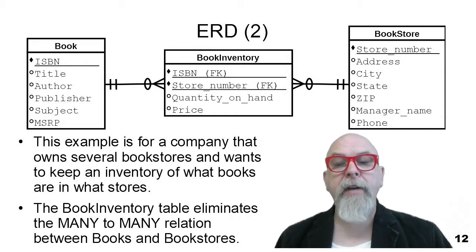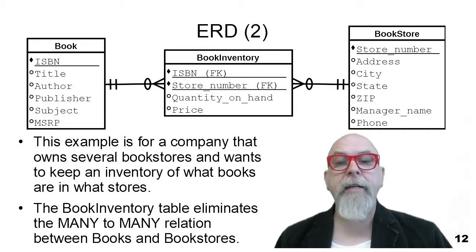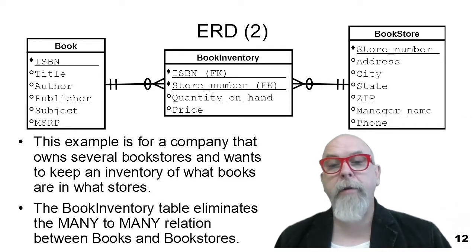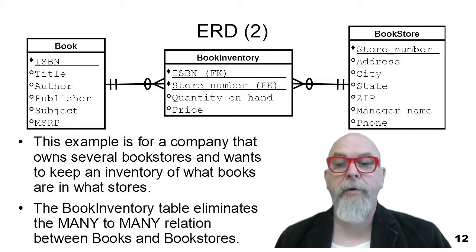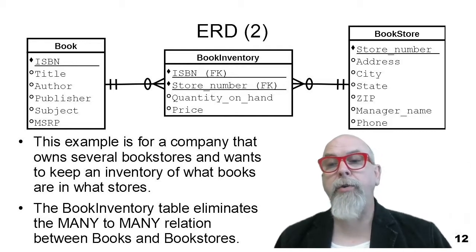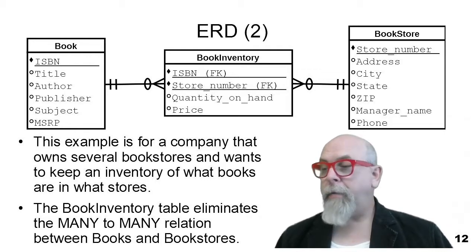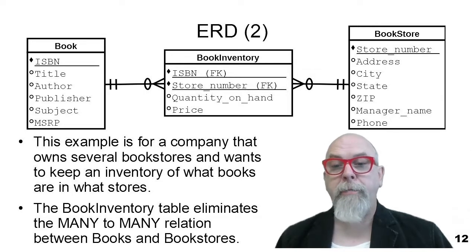Reading these crow's feet: a book has zero or more inventories, and an inventory belongs to one and only one book. A store has many inventories, and an inventory belongs to one and only one store. You could think of the inventory as a card for each store and each book, recording the quantity on hand and the price of that book.